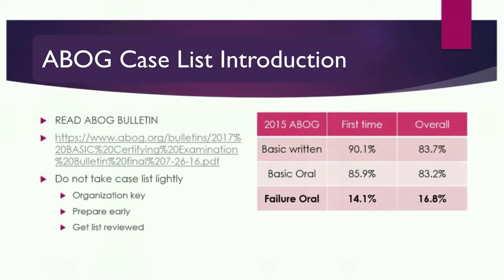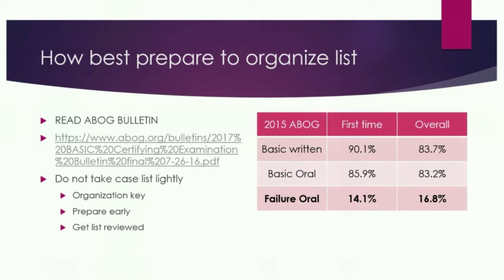Looking at 2015 data online for the future basic written and basic oral exams: the overall pass rate is 83.7% for the basic written and 83.2% for the basic oral. The total failure rate for the oral boards is somewhere around 14% to 16%. The most important thing is: can we adequately prepare so we don't end up in that 14% to 16%? Reading through the ABOG bulletin to know exactly what the expectations are for the case list is very important. Do not take the case list lightly.